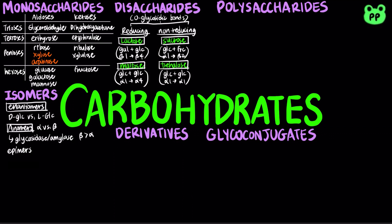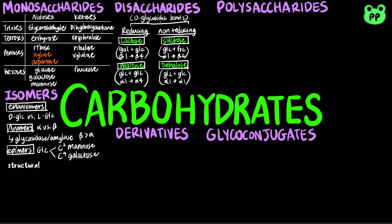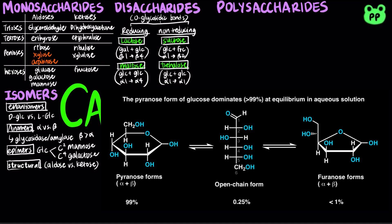Epimers or diastereomers only differ at a single chiral carbon. For example, mannose is an epimer of glucose at carbon-2, and galactose is an epimer of glucose at carbon-4. Structural isomers refer to aldoses versus ketoses mentioned earlier, such as glucose and fructose.